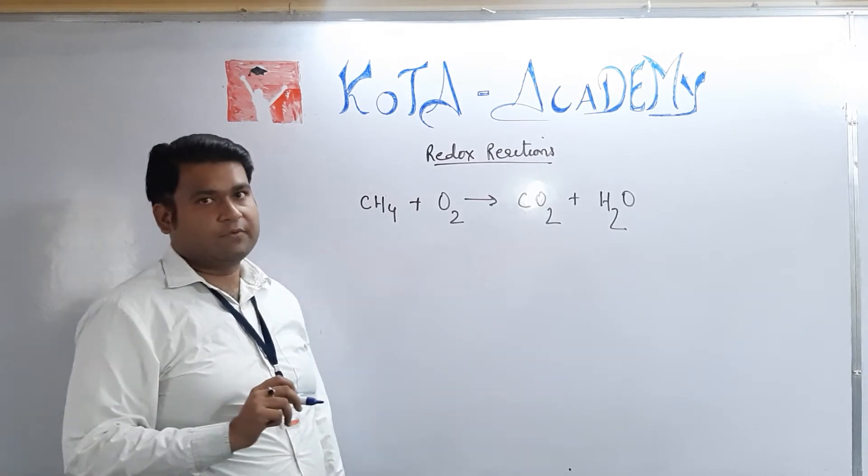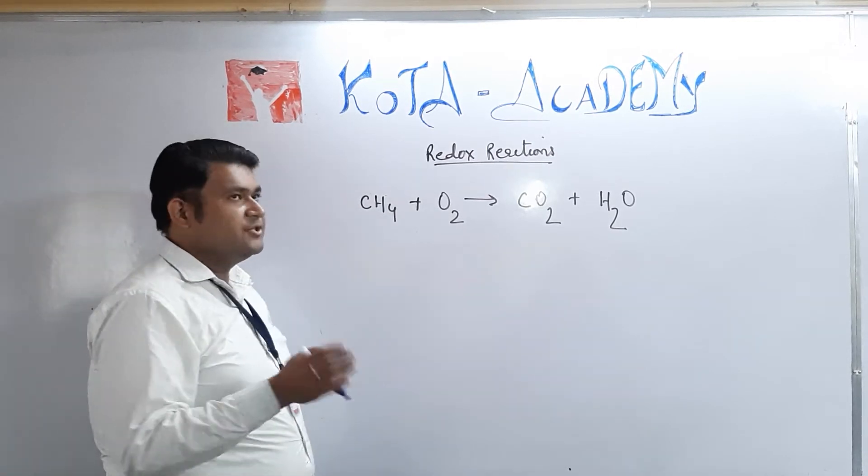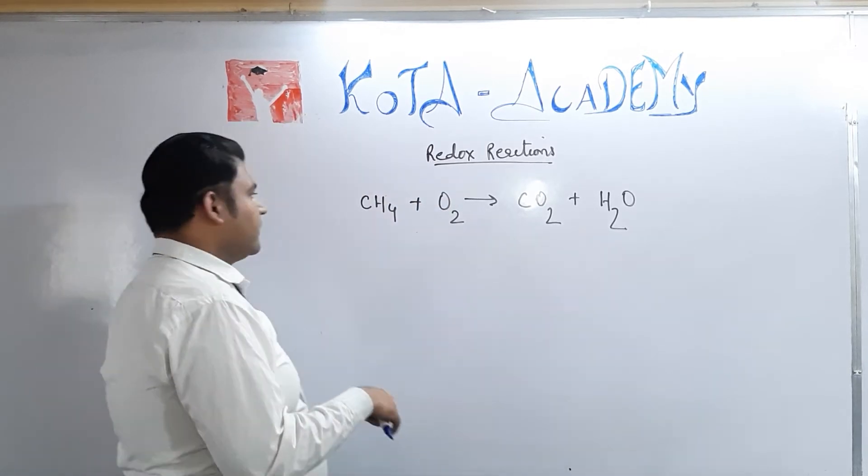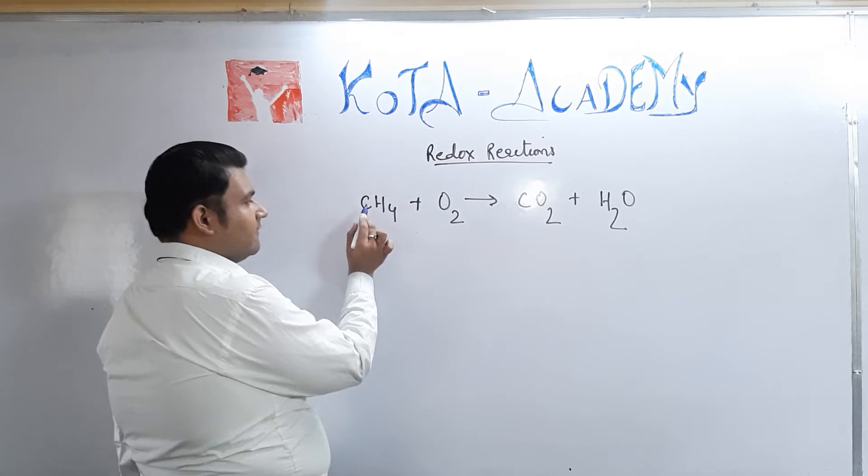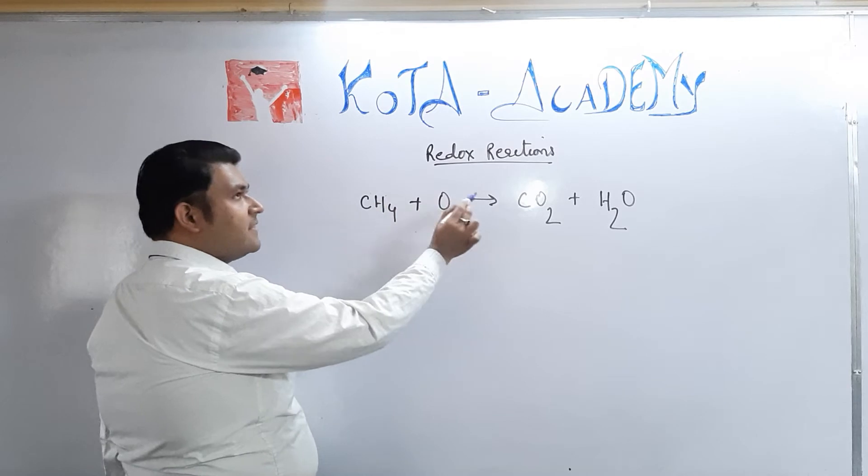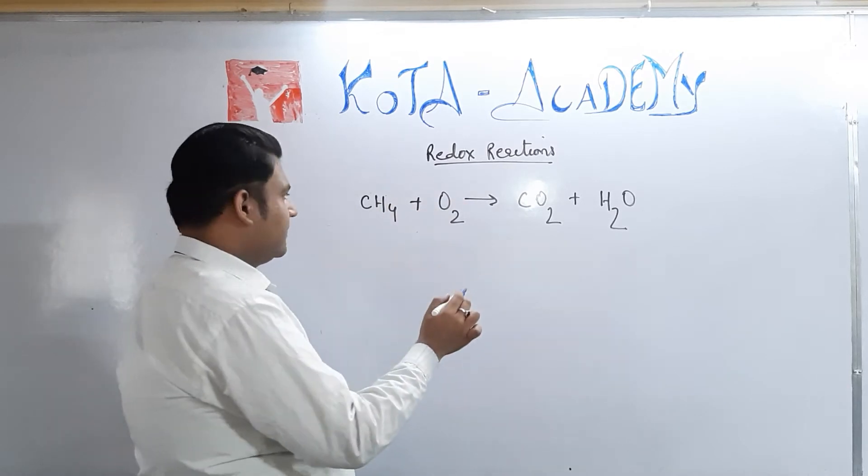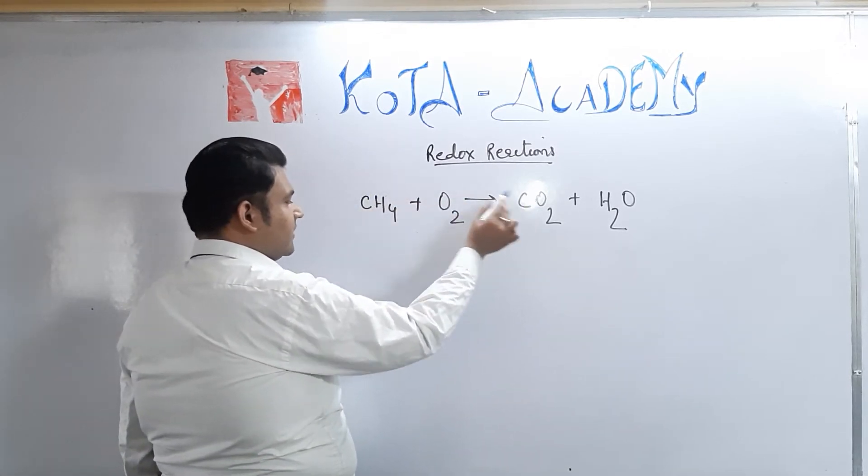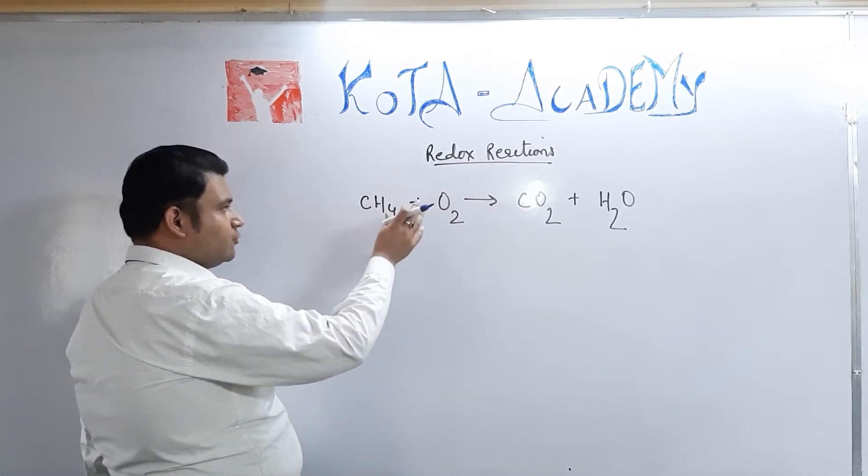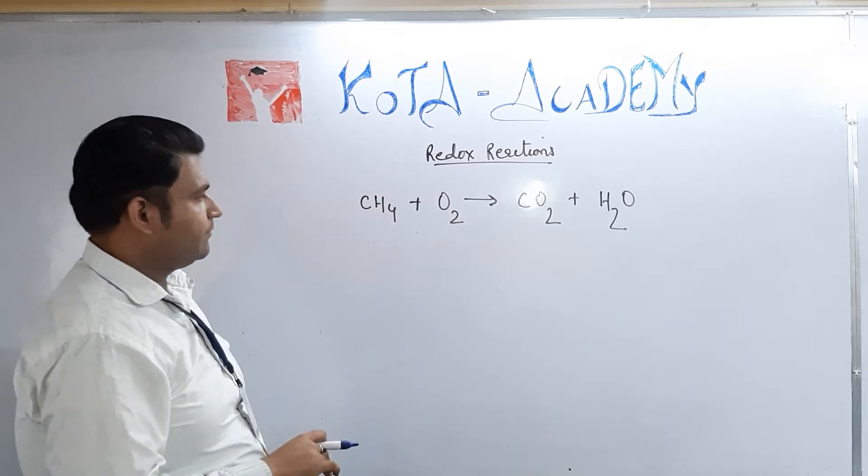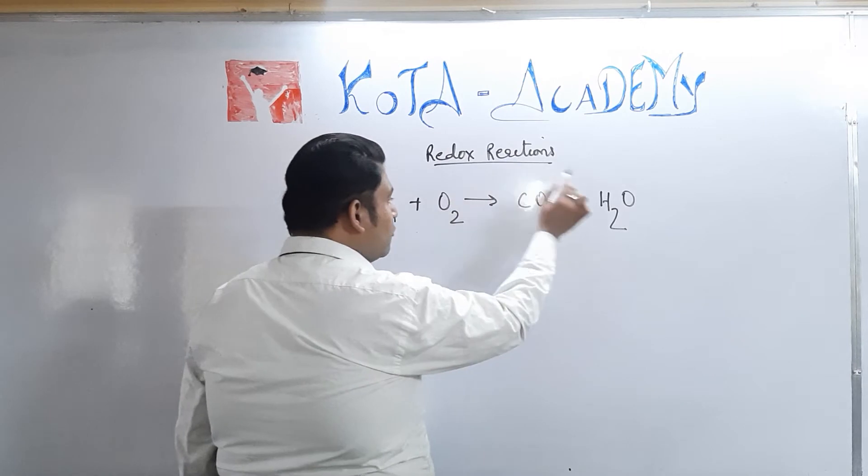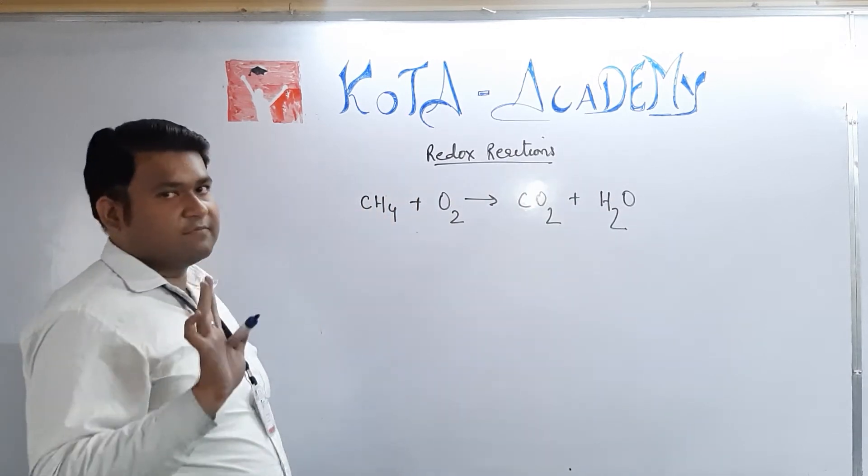So as you all are aware, addition of oxygen or removal of hydrogen is termed as oxidation. So here we can see that when methane is getting oxidized to carbon dioxide, both things are happening at the same time. That is, addition of oxygen is taking place, two oxygen atoms are substituting in the place of two O-hydrogen atoms. And we can say that oxygen is getting reduced to water.